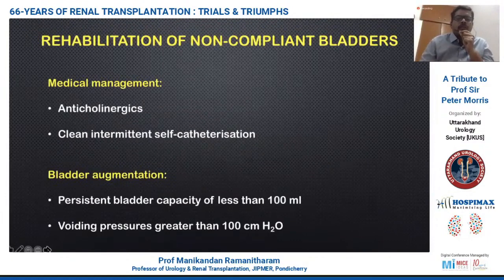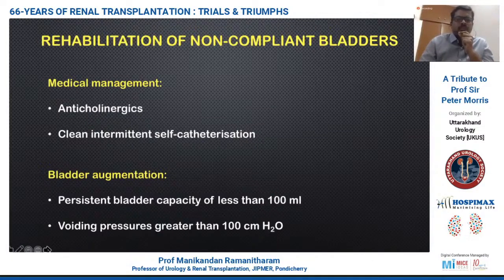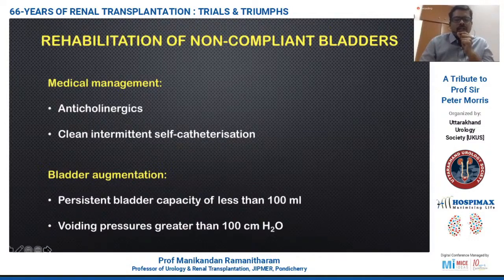We first need to rehabilitate non-compliant native bladders. We start with medical management using anticholinergics and clean intermittent catheterization, plus or minus bladder cycling. If at the end of this management the bladder capacity doesn't exceed 100 ml or voiding pressure remains greater than 100 centimeters of water, we need to proceed with augmentation cystoplasty before considering transplant.